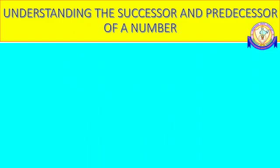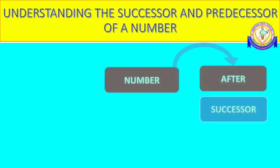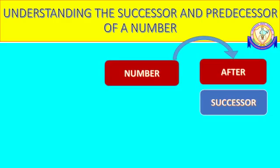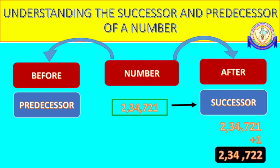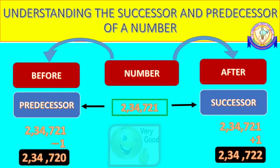Do you know what a successor is? Yes, it is the number that comes just after. Then what is a predecessor? The number that comes just before. How do we get the successor of a given number? Very simple — by adding 1 to the given number. And the predecessor — by subtracting 1 from the given number.